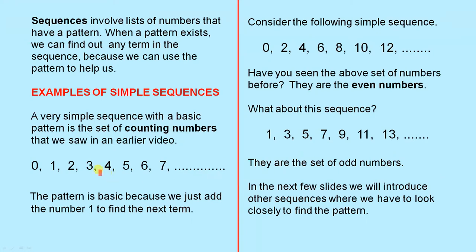Now the patterns in these three sequences are very basic. You just keep adding one to each number. Here you add two to each number, and here you add two to each number. Notice we start at a different place for the even numbers and for the odd numbers, but the pattern is the same. You keep adding two for each sequence.